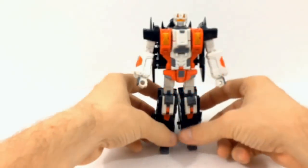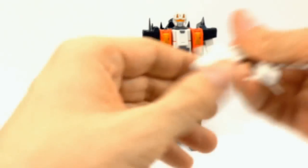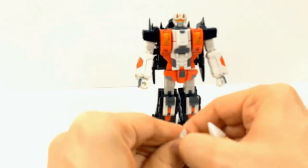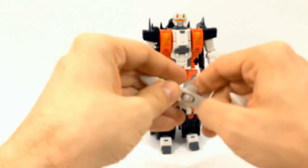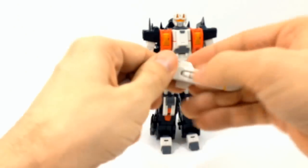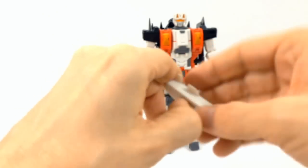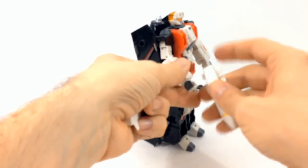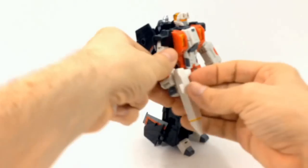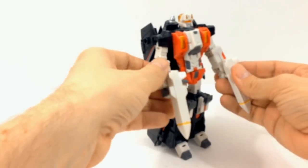Alright. And then we have F-15 Eagle in his robot mode. Now for his weapons, pull these little tabs out. And he can either hold them in his hands like that, have one in each hand kind of like this.